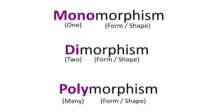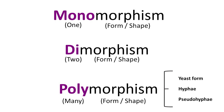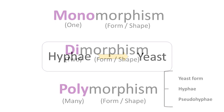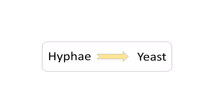Sometimes you might hear the term polymorphic fungi. These fungi can have more than two life forms – they can exist as yeast, develop hyphae like molds, and also form structures known as pseudohyphae.